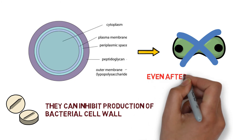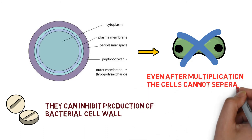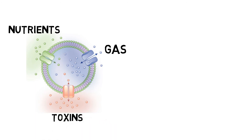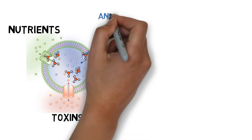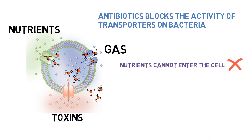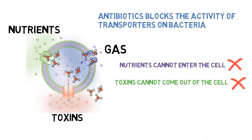Some antibiotics attack the transporter proteins present on the bacterial cell wall. These proteins allow nutrients and gases to enter the bacterial cell, while allowing toxins and waste to leave. Antibiotics can block these transporters, so nutrients cannot enter the cell, and toxins harmful to the bacteria cannot leave — the cell starves and dies.